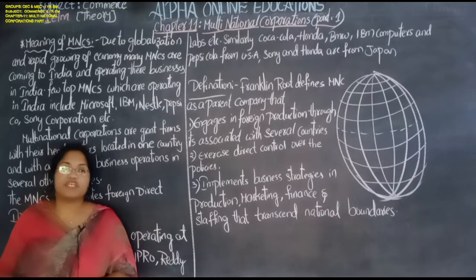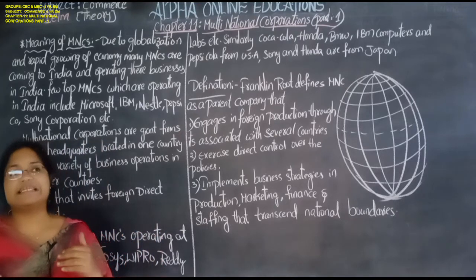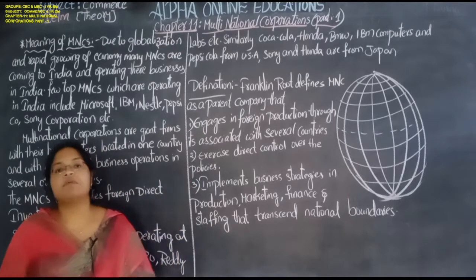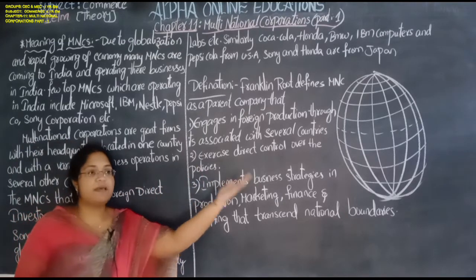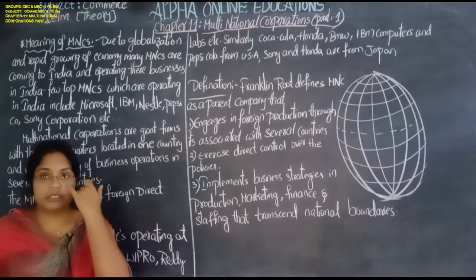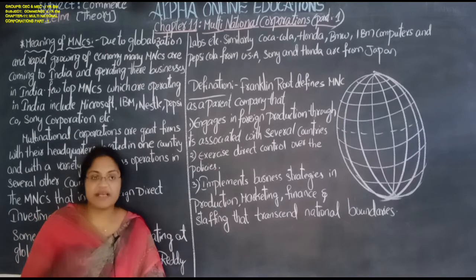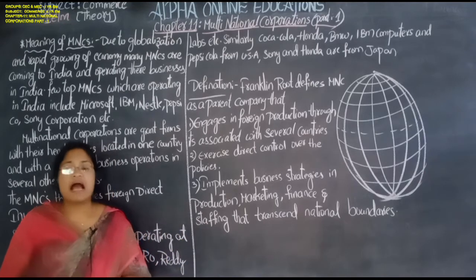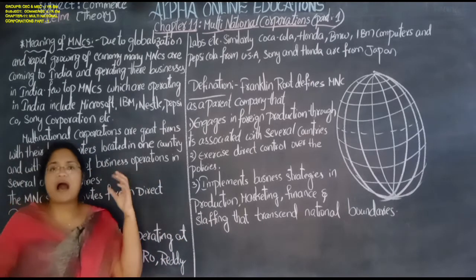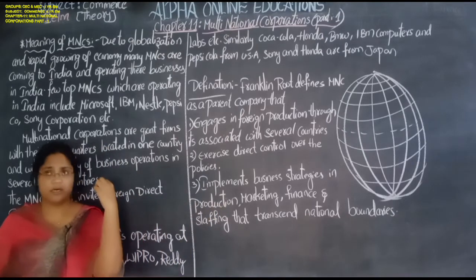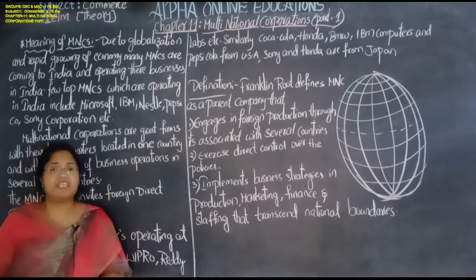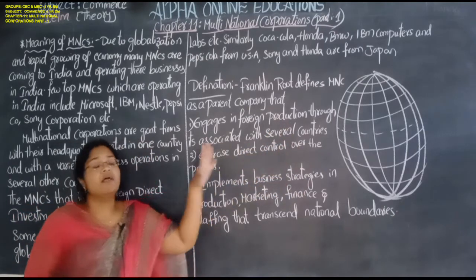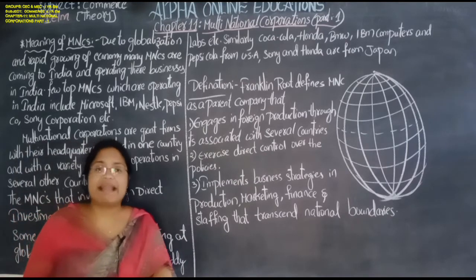A multinational corporation means a company which operates its activities in more than one country. Its headquarter will be in one country, but its branches will be established and its activities carried on in different countries. For example, one company has its headquarter in Sri Lanka and its branches are in India, Japan, Italy, Russia, Rome, and China. If its branches are all over the world, those companies are known as multinational companies.